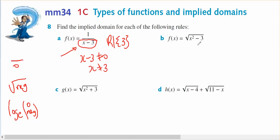In part b, I've got x squared minus 3 underneath the square root, therefore this can't be negative. x squared minus 3 has to be bigger than or equal to zero. Now I'm going to graph this to see where it's positive and where it's negative.